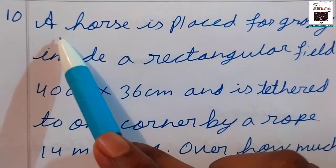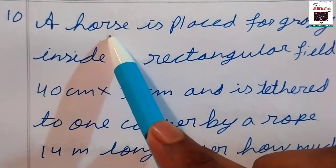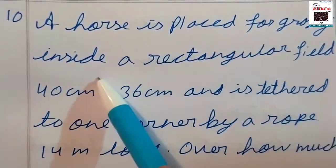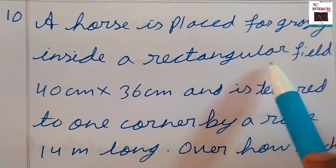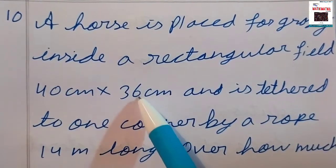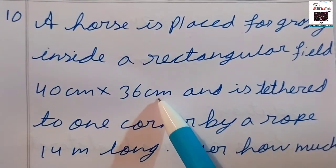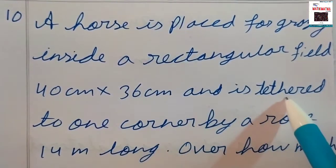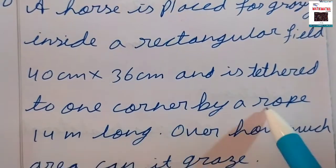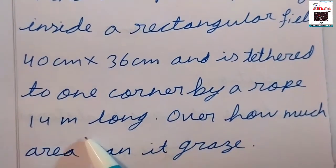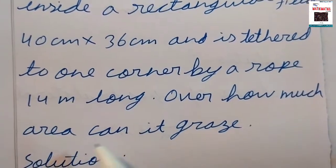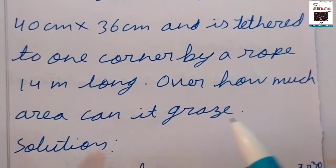Next question: A horse is placed for grazing inside a rectangular field of 40 m by 36 m and is tied to one corner by a rope 14 meters long. Over how much area can it graze?